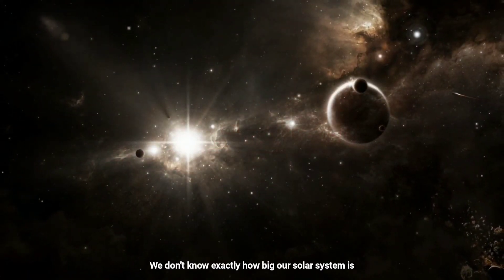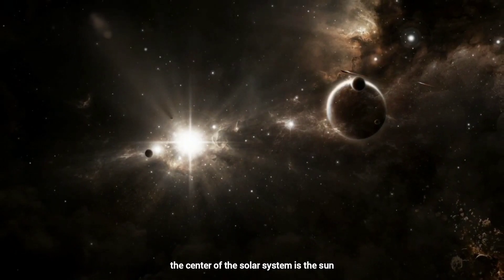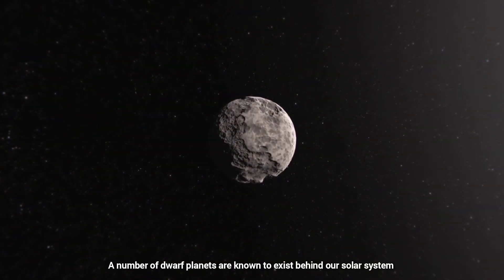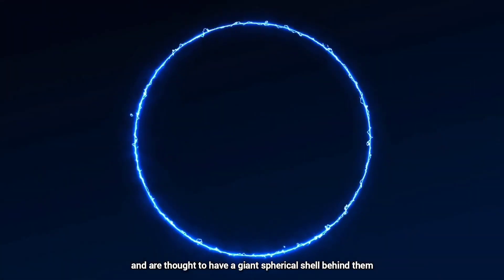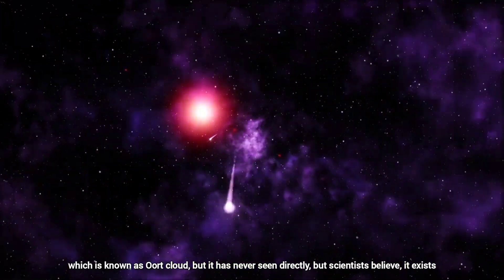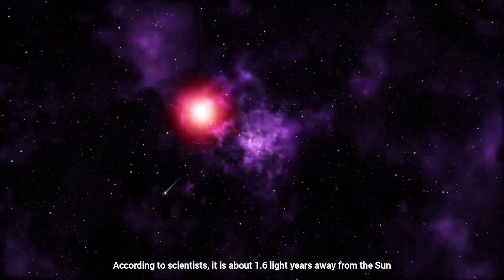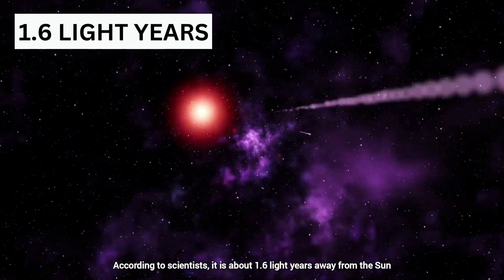We don't know exactly how big our solar system is. The center of the solar system is the Sun. A number of dwarf planets are known to exist beyond our solar system and are thought to have a giant spherical shell behind them, which is known as Oort Cloud, but it has never been seen directly. But scientists believe it exists. According to scientists, it is about 1.6 light years away from the Sun.